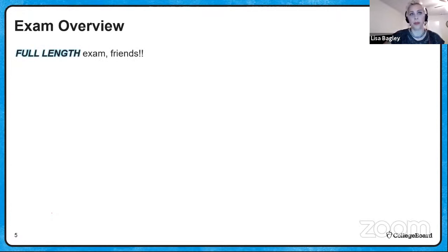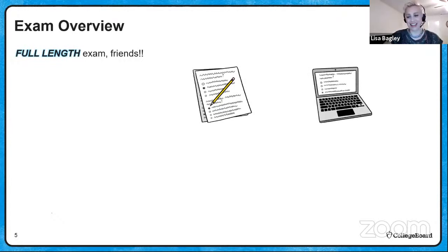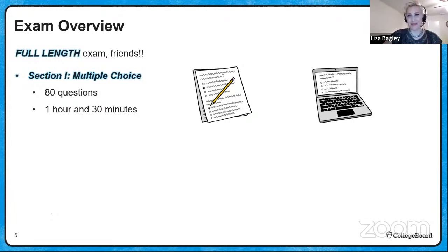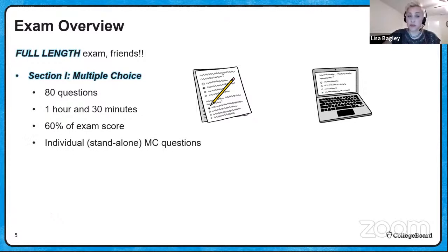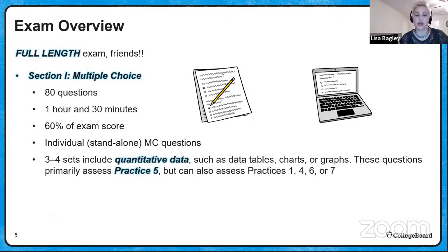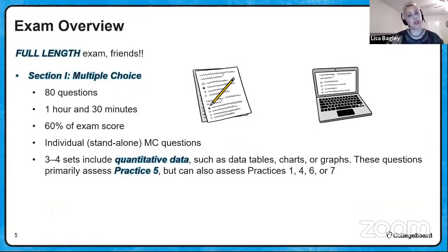This year it's a full-length exam. Section 1 is the multiple choice section with 80 questions lasting 90 minutes — it's 60 percent of your exam score. There will be individual standalone multiple choice questions, plus three or four sets of quantitative data, which can be data tables, charts, or graphs. These questions will primarily assess practice five, but can also assess practices one, four, six, or seven. You'll also have three to four sets with qualitative data or information from models, representations, or maps, primarily assessing practice two.